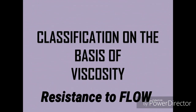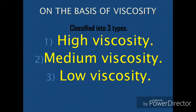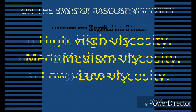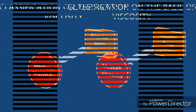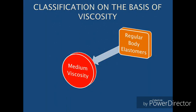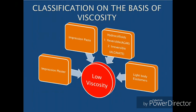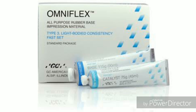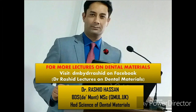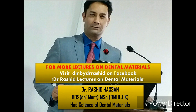Viscosity is the resistance of a material to flow. On the basis of viscosity, impression materials are divided into three types: high viscosity, medium viscosity, and low viscosity. High viscosity examples include impression compound and putty elastomers. Regular body elastomers are the only materials classified under medium viscosity. Low viscosity impression materials have increased fluidity; examples include impression plaster, impression paste, both hydrocolloids — agar and alginate — and light body elastomers. The impression materials remain the same, but it is the criteria that differentiate one from another, placing them into different categories.